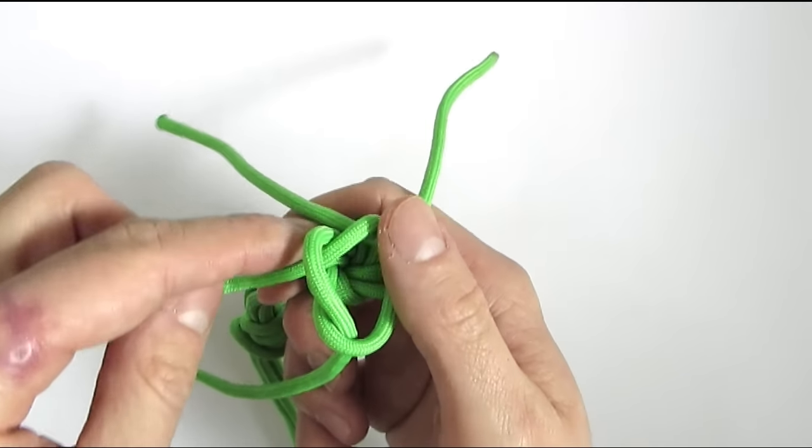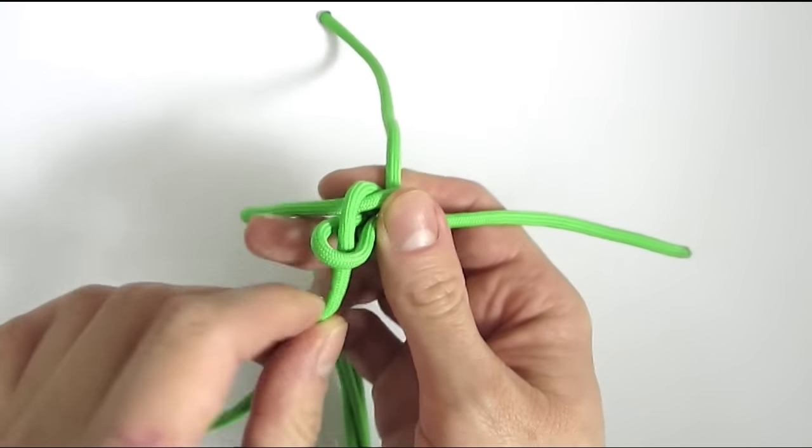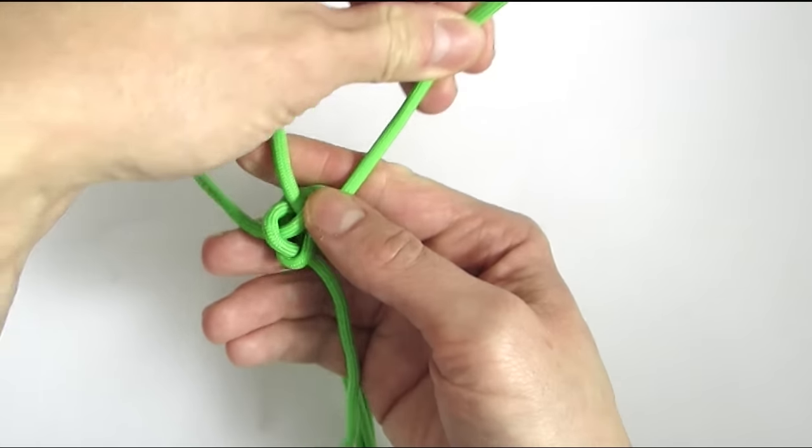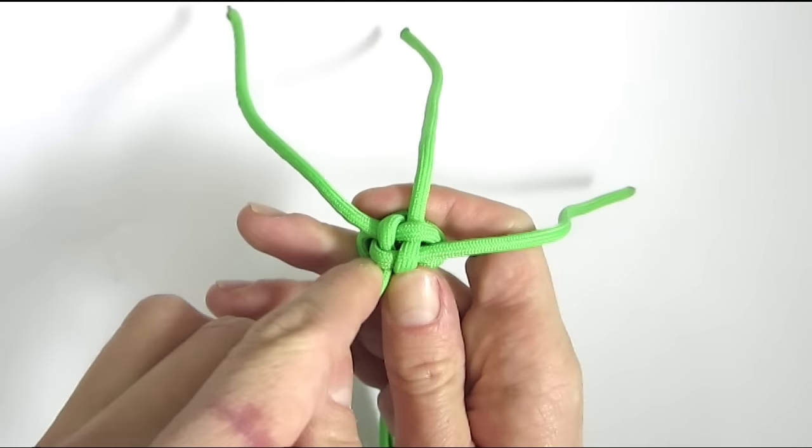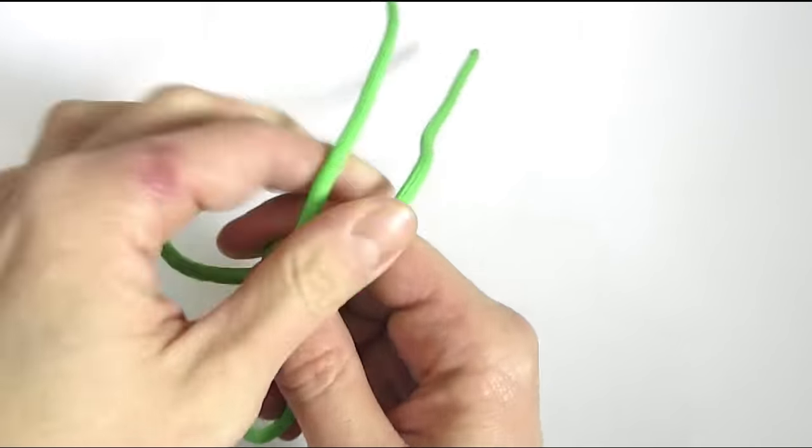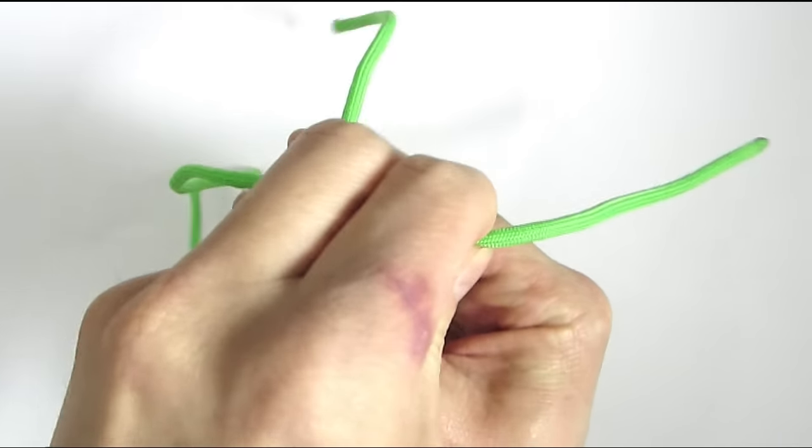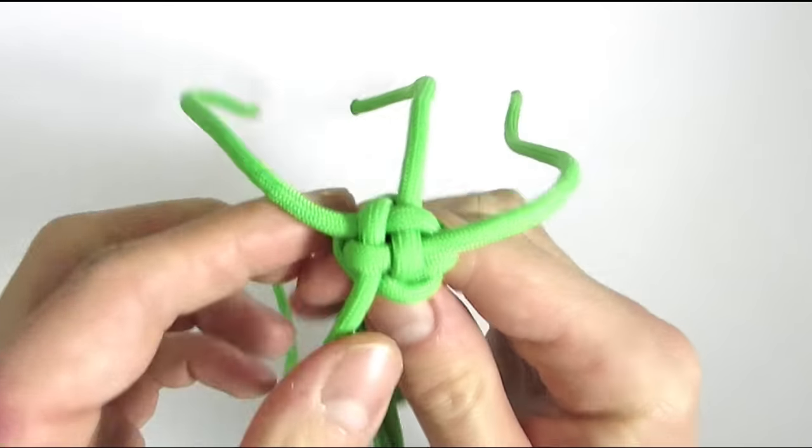Once you tighten this up, you're going to get a crown knot on top of our Matthew Walker knot. So like this.